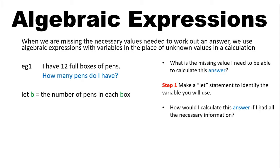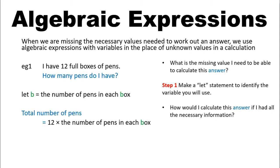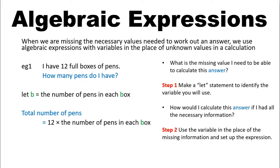Next, how could we calculate this answer if we had all the necessary information? If I knew how many pens were in a box, how would I calculate the total number of pens I had? I would say that the total number of pens is equal to 12 times the number of pens in each box. So my step two is to use the variable that we just defined — use B — in the place of the missing information to set up an expression. So I would write that as 12 times B.